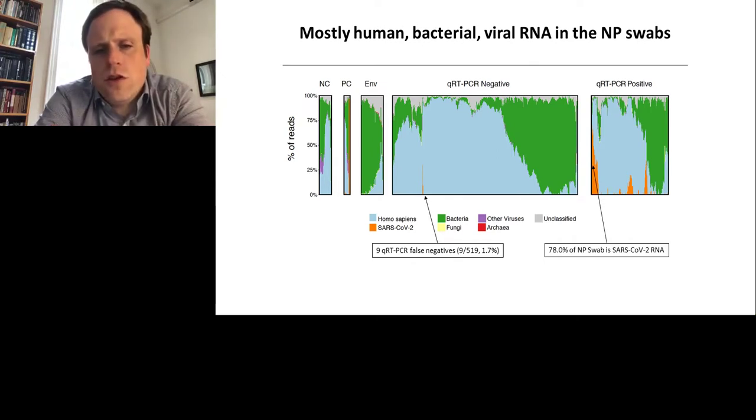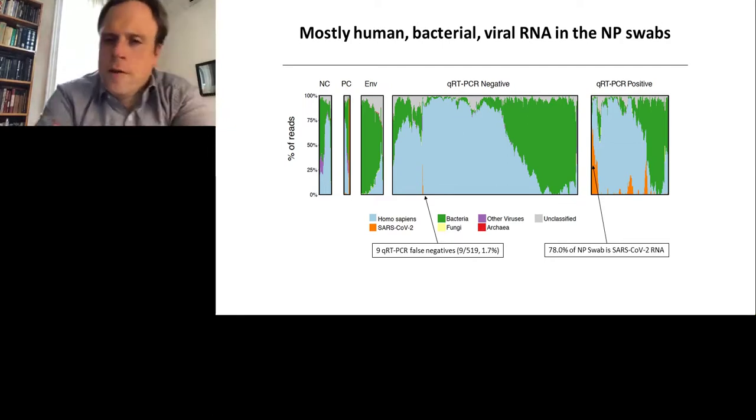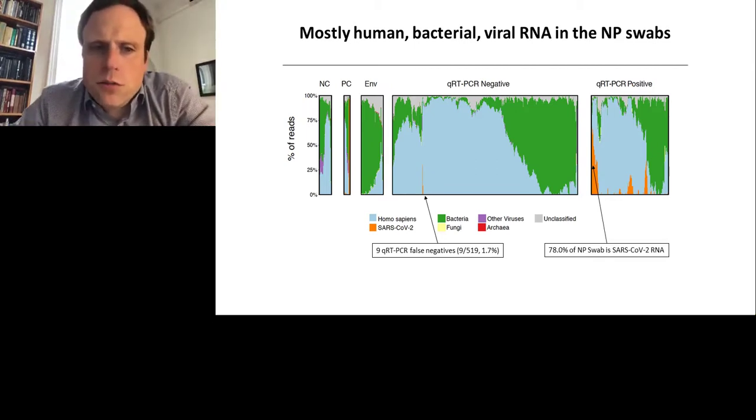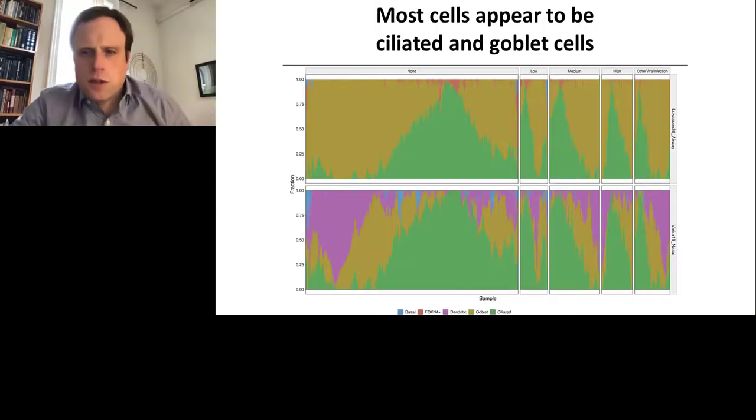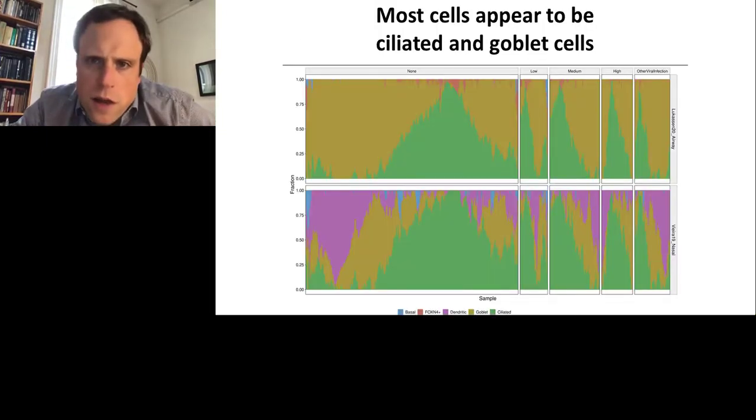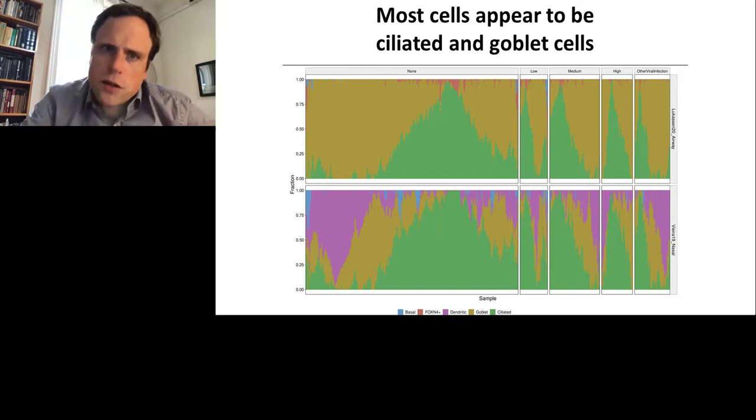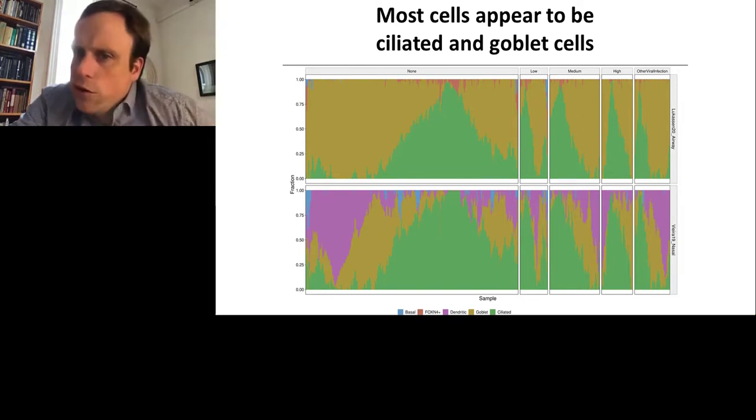In particular, could we use it to do a cellular deconvolution matrix using MuSiC, or we've used a variety of other tools, like xCell or CIBERSORTx. They generally work all well, but we use MuSiC here to basically take the signatures of known cell types and then break down what was actually in the NP swab when we sequenced it. So in particular, this is based on airway annotations for different cell types, and these are nasal. Most of them were ciliated or goblet cells, you can see. And there was some evidence of dendritic cells compared to the nasal profile, but for the most part, it was ciliated and goblet cells that we could detect.